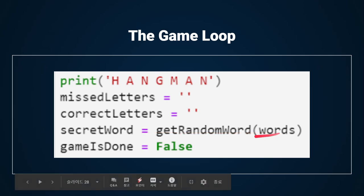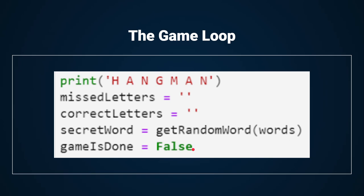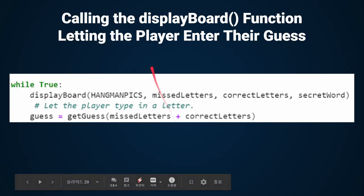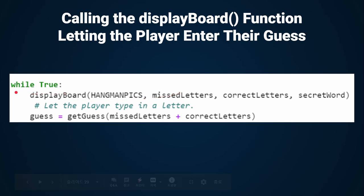The getRandomWord function, called as secret_word, evaluates to a randomly selected word from the words list. The gameIsDone variable is set to False — this code will set gameIsDone to True when it wants to signal the game is over and ask the player whether they want to play again. After the beginning process of Hangman, we need to call the displayBoard function. The while loop's condition is always True, meaning it loops forever until it encounters a break statement. The displayBoard function is passed the three variables set on the previous page, displaying the appropriate Hangman board based on correctly guessed and missed letters.